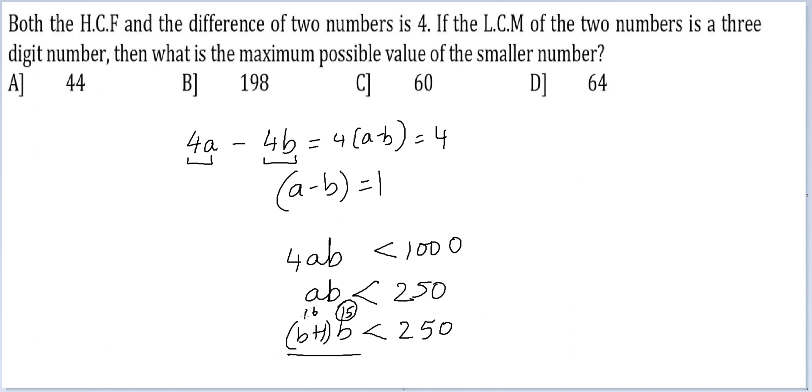Therefore, the value of B will be 15, the value of A will be 16. So the two numbers that you are dealing with are 64 and 60. When they are asking me what is the maximum possible value of the smaller number, the answer will be option C, 60.